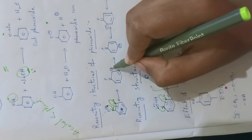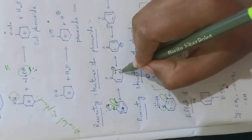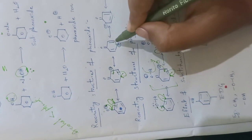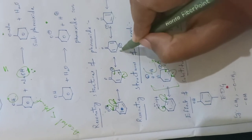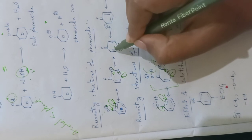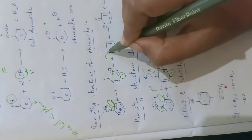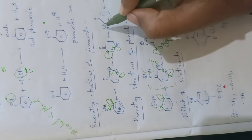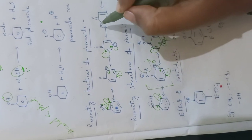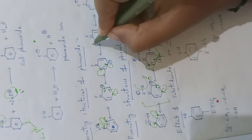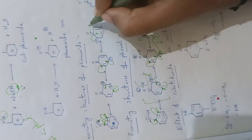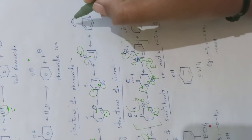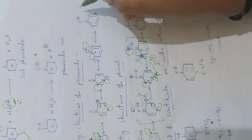This negative charge again makes a pi bond, and this pi bond moves to the adjacent carbon, which gets a negative charge and a pi bond is created. In the next step this negative charge makes a pi bond, and this pi bond moves to the carbon atom, which gets a negative charge. Finally, this pi bond moves back to the oxygen atom and the negative charge is again present on the oxygen.